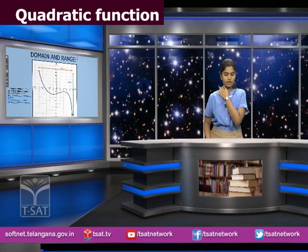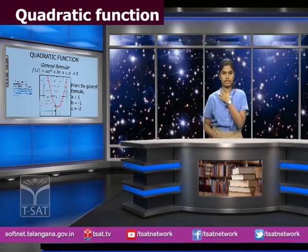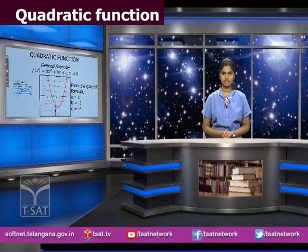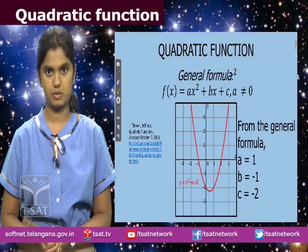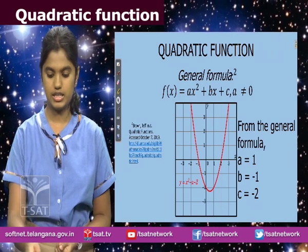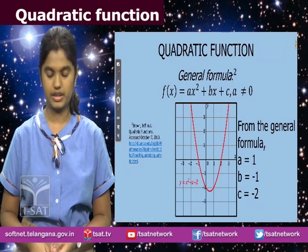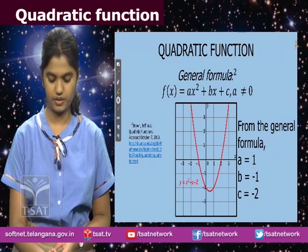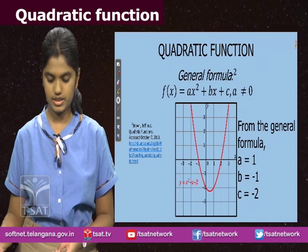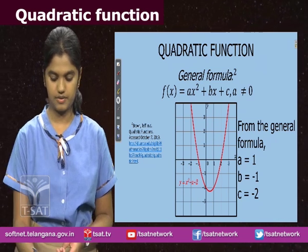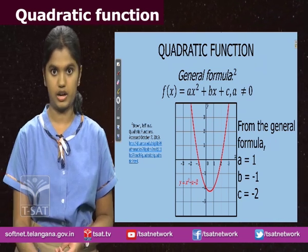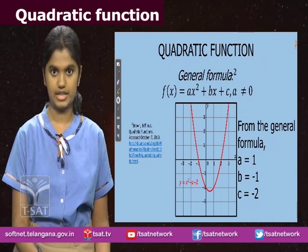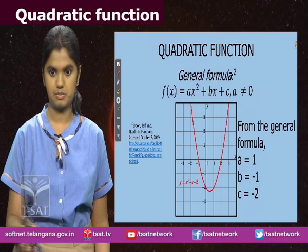Moving on to quadratic functions — the general form of a quadratic function is ax² + bx + c. The c always depicts the y-intercept. In this graph, you can see that the value of c is minus 2 because the y-intercept is minus 2.